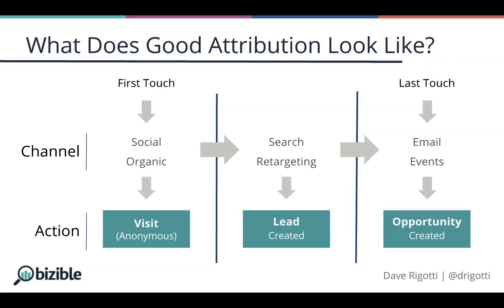Multi-touch attribution simply applies the revenue credit for a deal back to multiple marketing channels to determine the revenue and ROI of your efforts — giving a little bit of credit to social, a little bit to retargeting, and a little bit to email. The second piece to a good attribution model is making sure you're measuring your digital and offline channels, like events, together and not in isolation. You don't want to be double-counting your channels just because your attribution isn't connected.